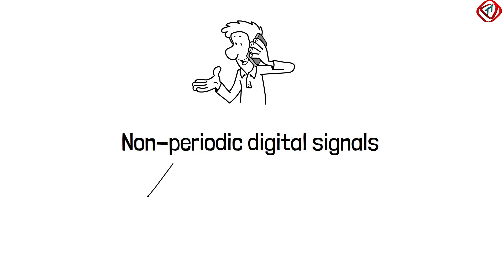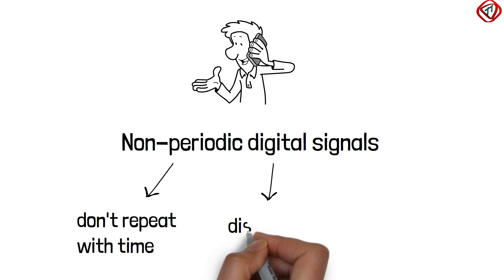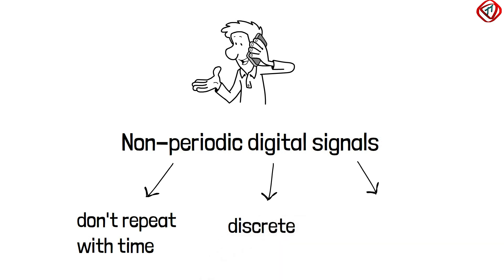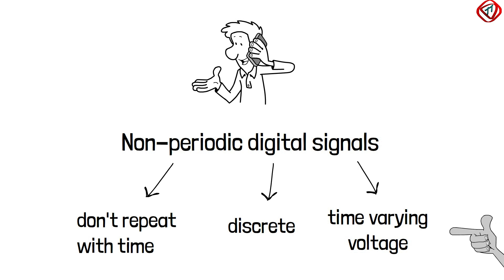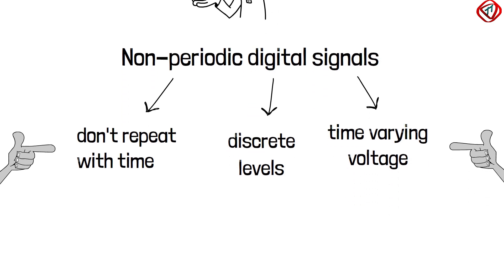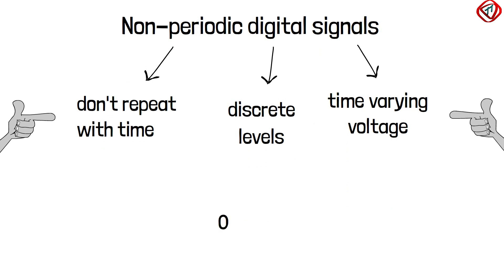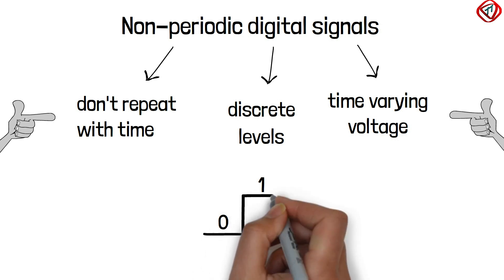Non-periodic means which do not repeat over time. Digital means discrete, and signal is a time-varying voltage. So a time-varying voltage having discrete levels which do not repeat over time is called a non-periodic digital signal. The discrete levels are represented as 0 and 1, where 0 is a low voltage and 1 is a high voltage.